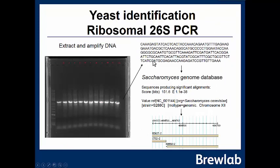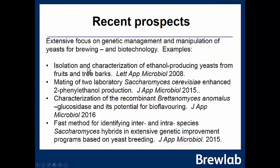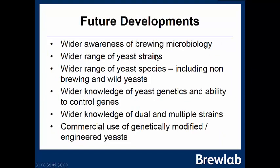We can extract DNA from these isolates, sequence it, and compare it with genome databases to identify species and strains. There's increasing focus on molecular biology — isolating yeasts from fruits and tree barks, laboratory-enhanced flavour production, recombinant Brettanomyces, and hybrid development methods. The future will bring more awareness of brewing microbiology, more yeast strains and species, more genetics, dual and multiple strains, and potentially genetically engineered or gene-modified yeast. But of course, we must always ensure we can culture them up and propagate them properly.